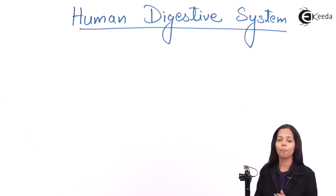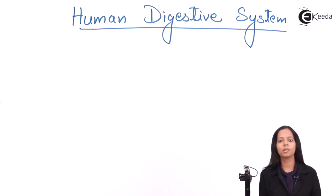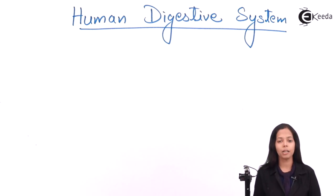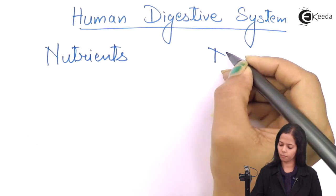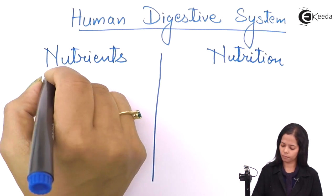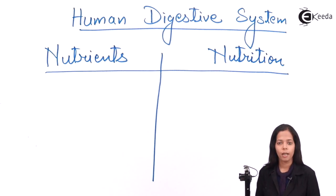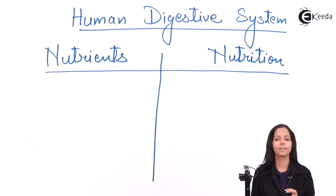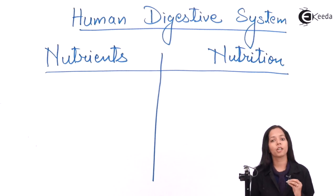After getting broken down, food can give you energy through some other process. So today we will study how food is broken down — it is broken down by a system called the digestive system. Before we study what the digestive system is, we need to know the difference between nutrients and nutrition. Nutrients are those chemicals, or a set of chemicals, required by your body in proper proportion.